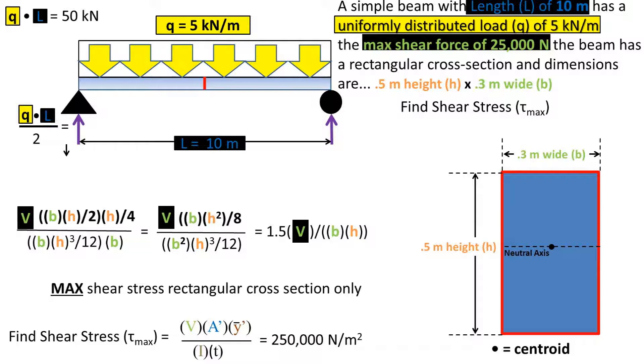Now if you're like me, you want to shortcut the process as much as possible. We can reduce this equation for the max shear stress to 1.5 times the shear force max divided by the area of the cross section. This is only for the max shear stress of a rectangle.